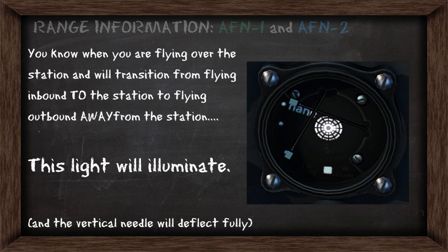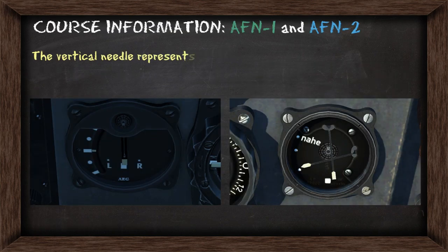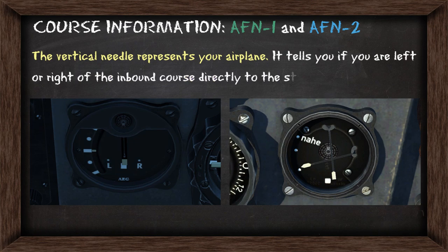For course information, the vertical needle will represent your airplane. It's telling you if your left or right is the inbound course that will take you direct to the station. So if you were to the right of course, the needle is going to be deflected to the right, and you need to start turning left to get yourself pointed towards the station. Remember that because there's wind involved, you may not necessarily be flying a straight path — you'll be constantly needing to adjust your heading to keep that needle centered on your way to reach the station.